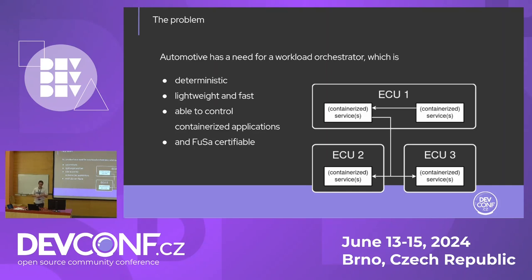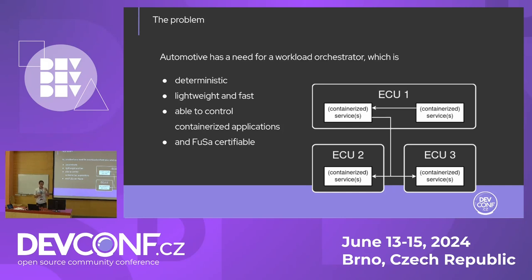For example, to start or stop containers on multiple ECUs or multiple nodes — and this is exactly what BlueG tries to provide. We have a workload orchestrator which is deterministic, so we know when what will run where. It should be as lightweight as possible due to resource limitations, and it should be as fast as possible.